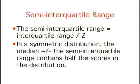A related measure of variability is called the semi-interquartile range. The semi-interquartile range is defined simply as the interquartile range divided by 2. If a distribution is symmetric, the median plus or minus the semi-interquartile range contains half the scores in the distribution.